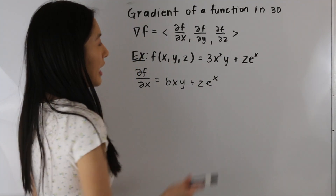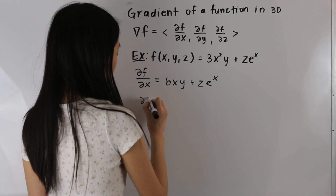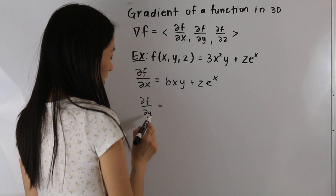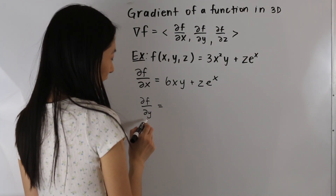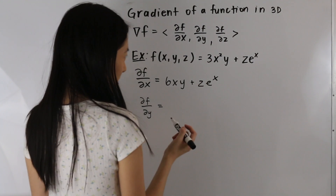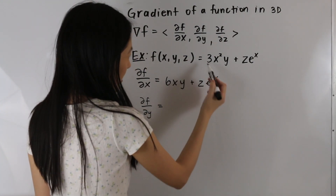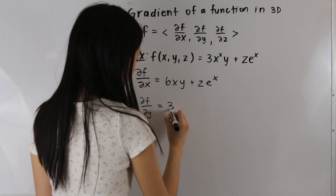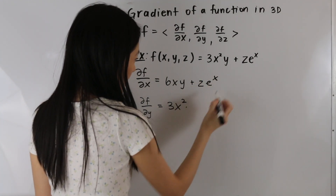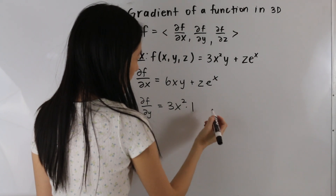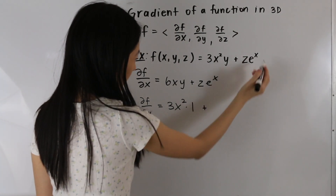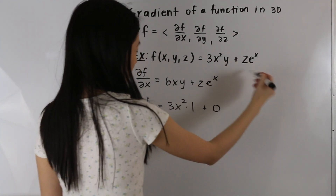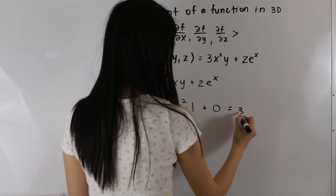Now let's go ahead and take the partial derivative of f with respect to y, holding x and z constant. The 3x squared is just a constant, and we're taking the derivative of this y here, so we get 3x squared times 1. The second term has no y in it, so it's just a constant giving 0. So the partial derivative with respect to y is 3x squared.